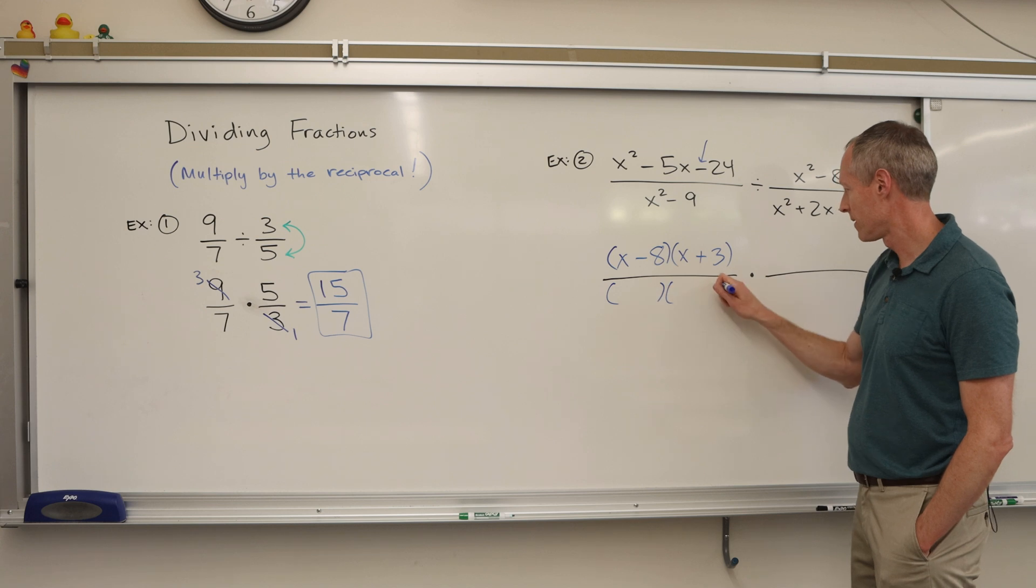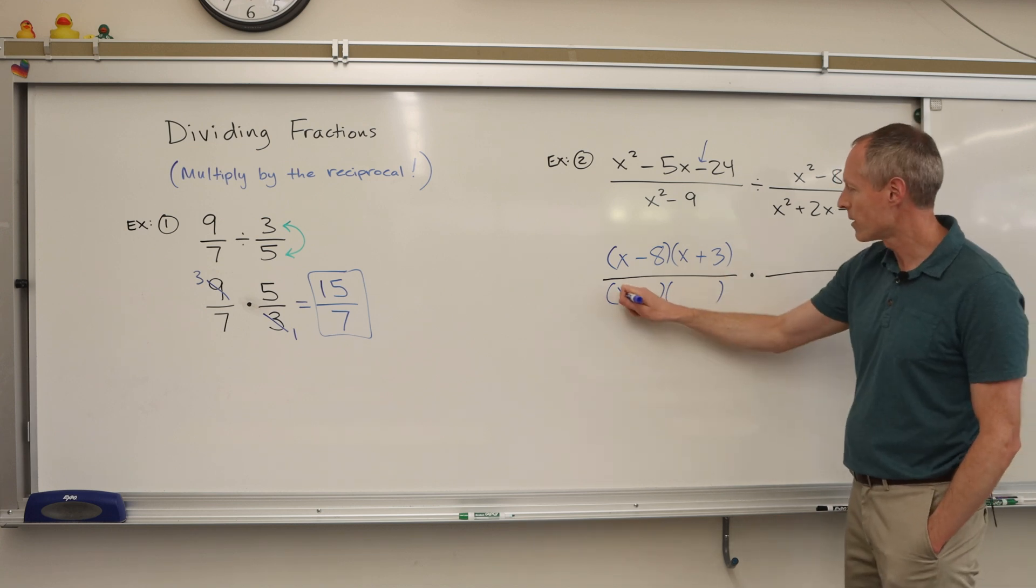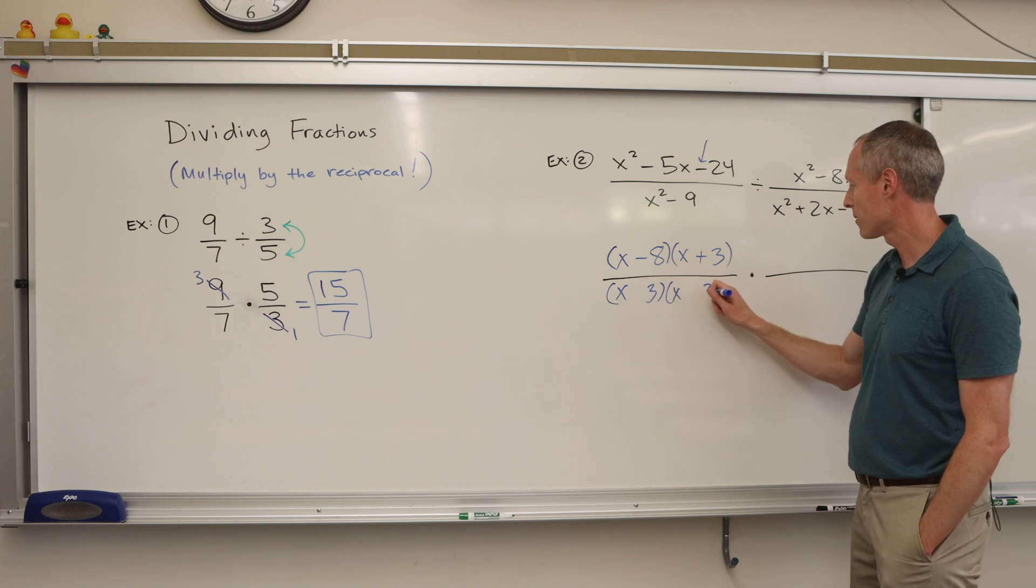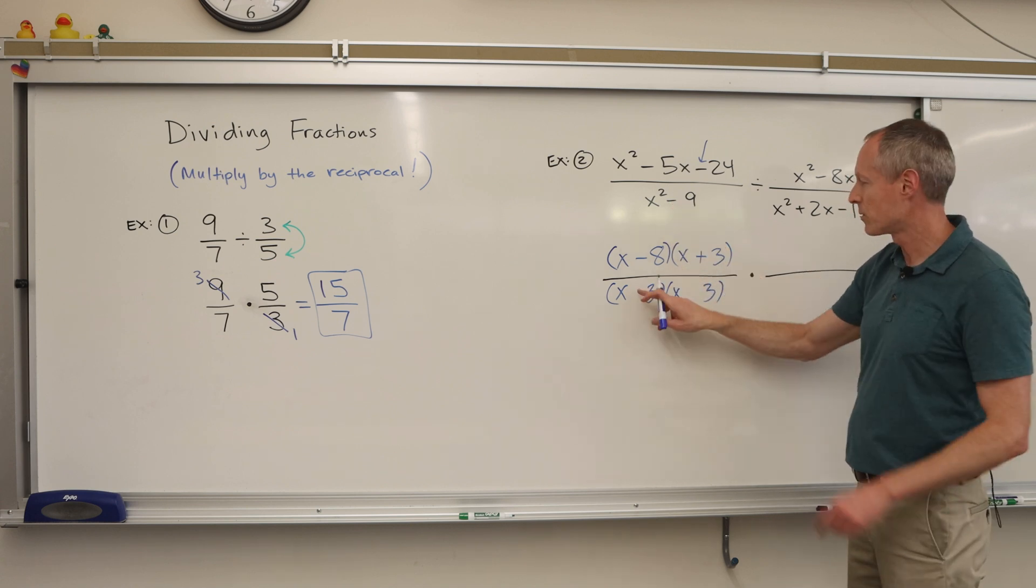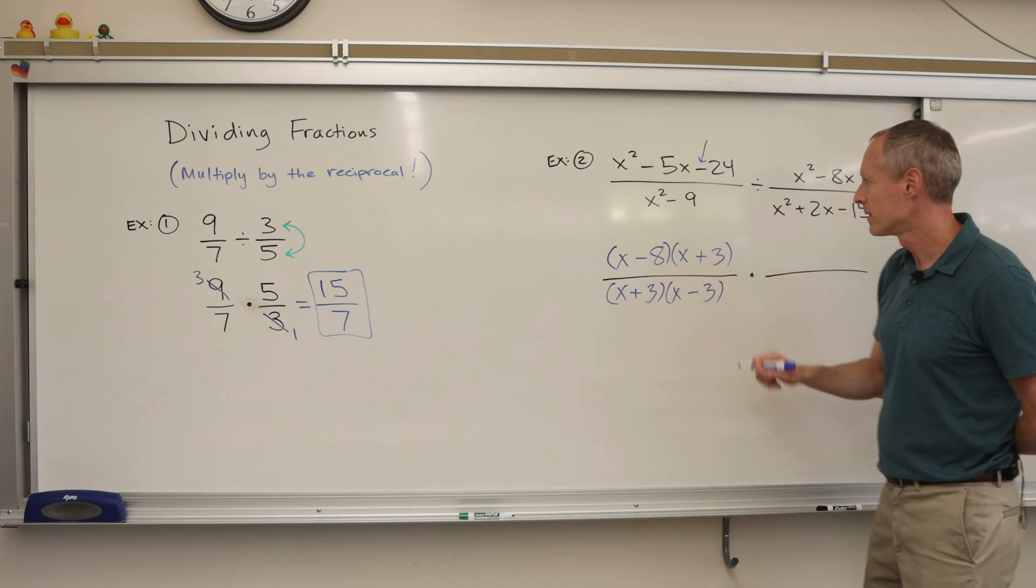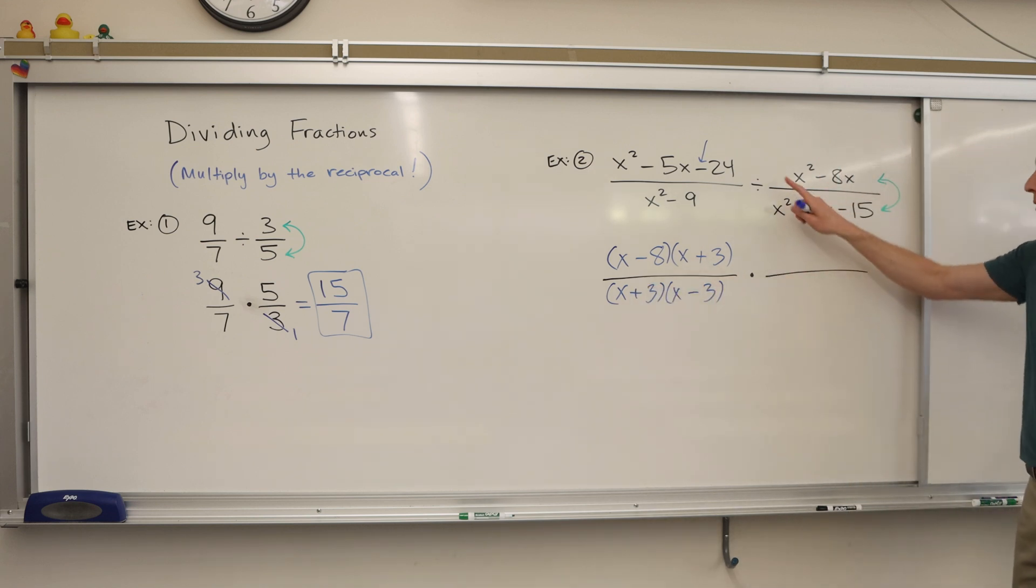Then we can factor this one. That's called the difference of two squares. So x squared is x times x and 9 is a perfect square, 3 times 3. When it's the difference of two squares, you get different signs here. So plus and minus.